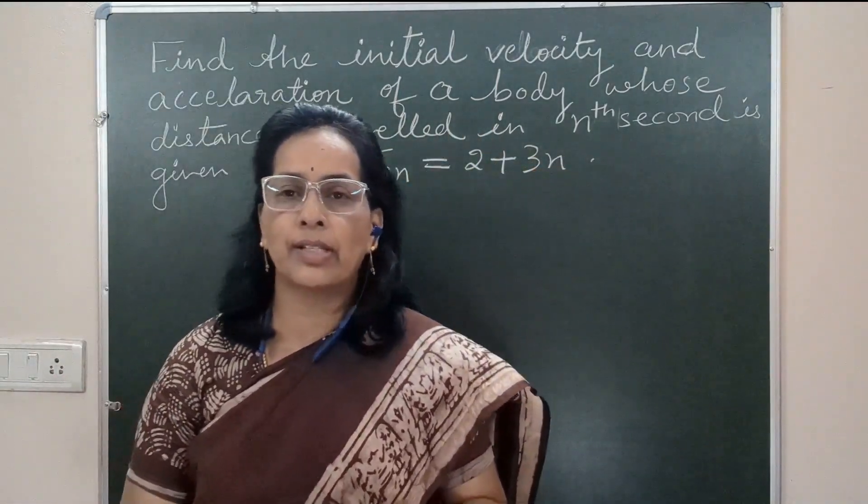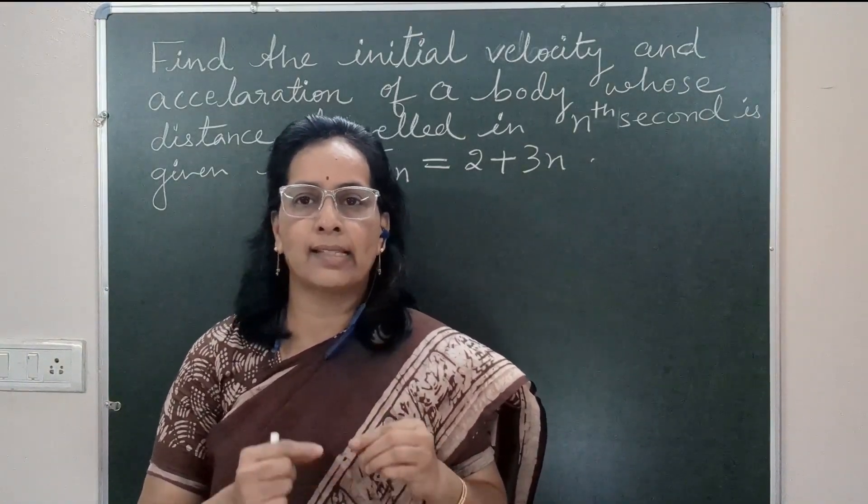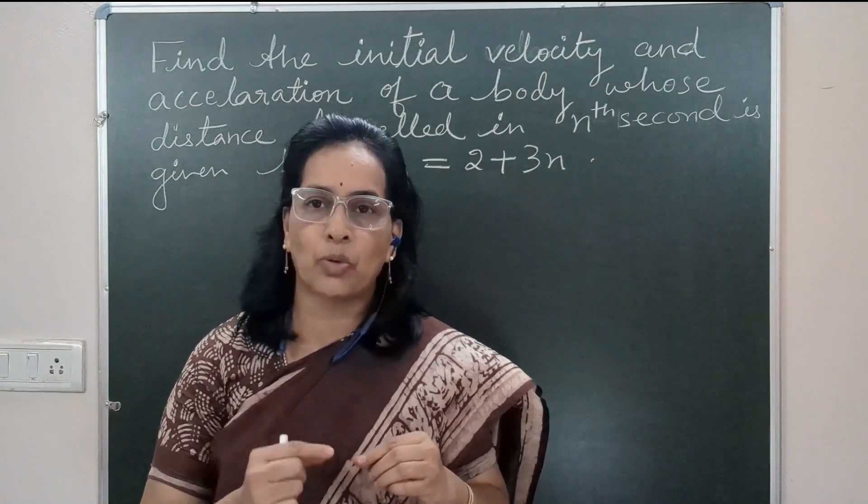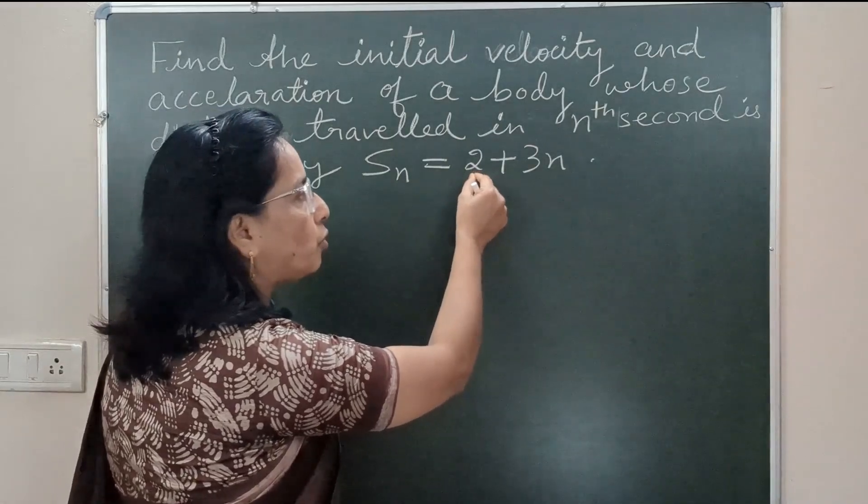We know that distance traveled by a body in the nth second is given by Sn = u + (a/2) times (2n - 1). But here, distance traveled in the nth second is given as 2 + 3n.